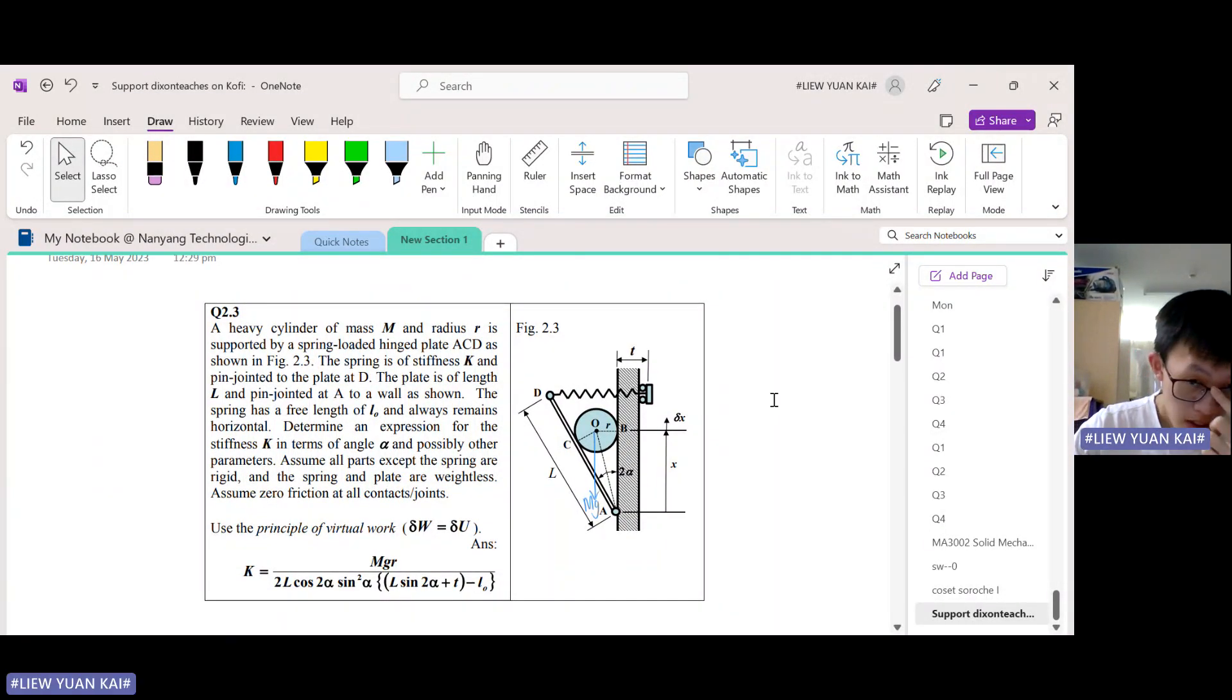Okay, question three. So we have a heavy cylinder put here, and we want to find, what are we asked to find? We're asked to find a spring constant k.